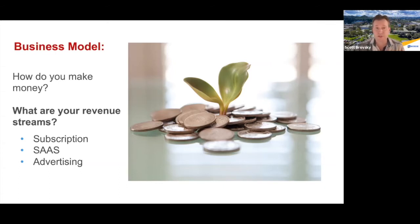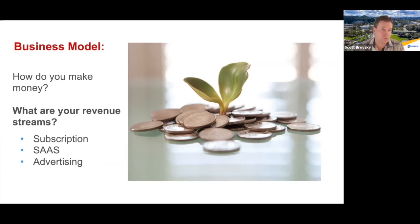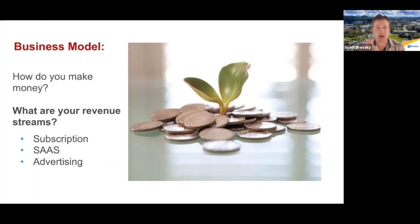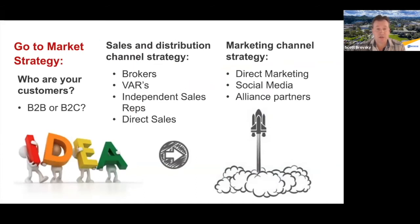The third weakness we see — especially for those going after seed capital from institutional investors — is milestone-based financing. Investors don't want just a typical pie chart showing 20% sales and marketing, 20% development. They want to see an actual timeline of how you're going to spend the money and what milestones it's going to get you to. So take go-to-market strategy, milestone-based financing, and business model seriously in your deck.